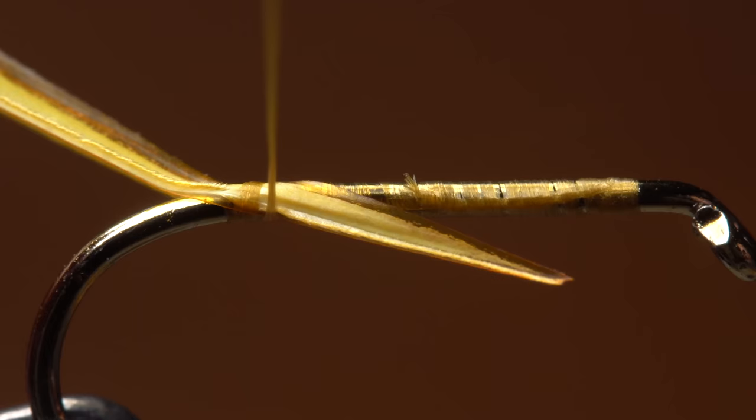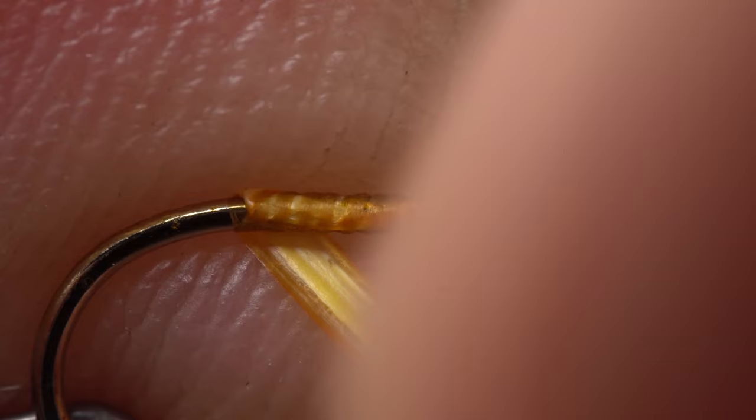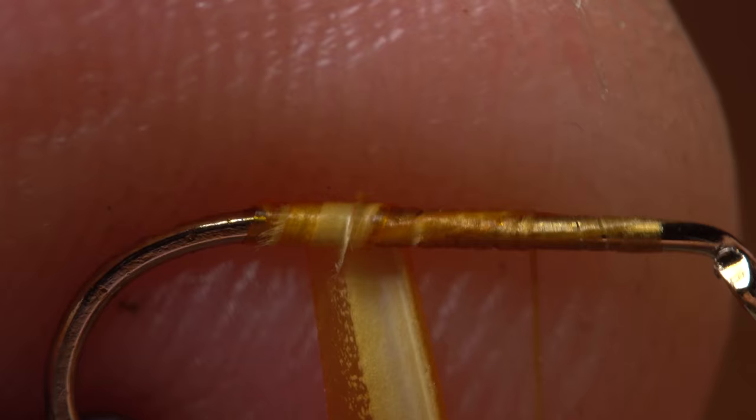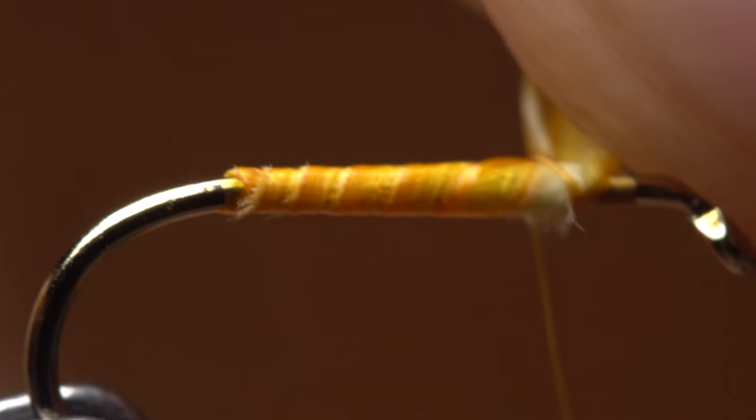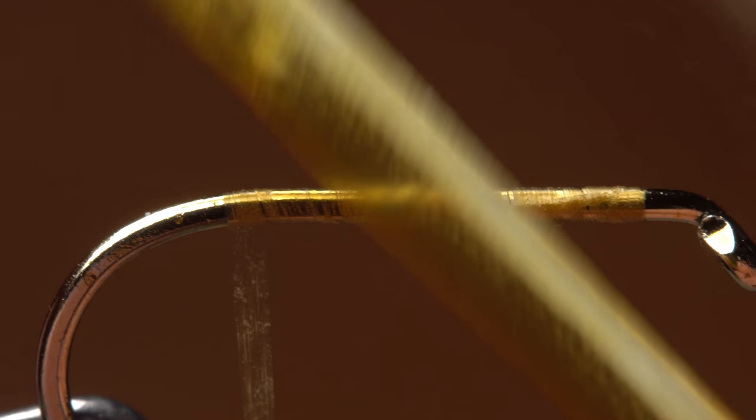If the biot is tied in with the notch side pointing up and forward like so, after tying the biot will fold over on the very first wrap and the frilled edge will lead the way up the hook shank, while the trailing edge will mash the little fibers down. This creates a nice looking natural body, but it doesn't exhibit much segmentation.